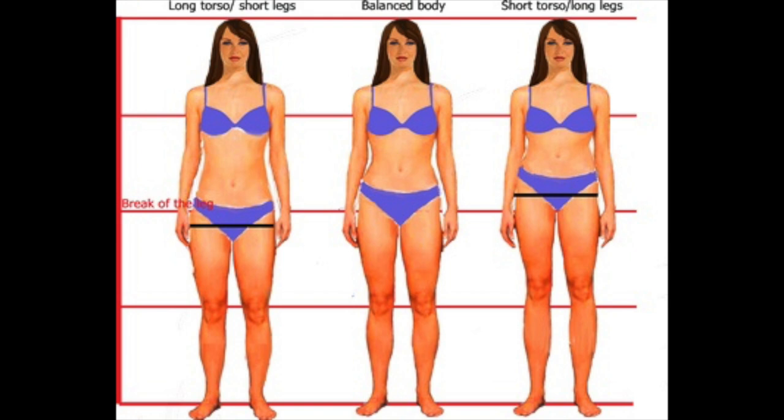The middle lady's waist is equal distance between her shoulder and her thigh break. The lady on the left has a much longer distance between her shoulder and her waist than between her waist and her thigh break, so she's long-waisted — long in the upper part of her body. The lady on the right has a short distance between her shoulder and her waist, almost as if her waist is right under her bust. This is quite common if you're large-busted. What it means is she tends to have longer legs, so her thigh break comes up much higher.